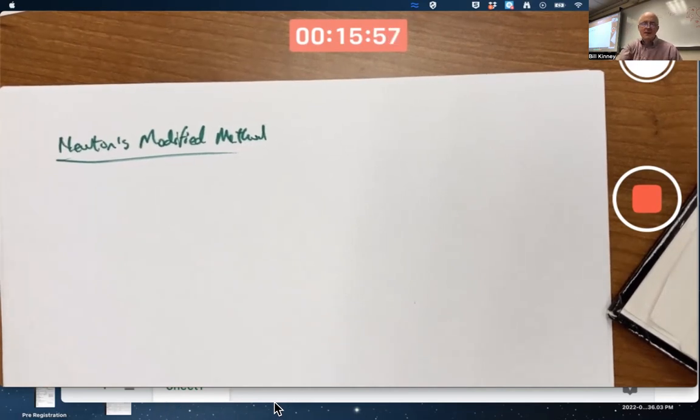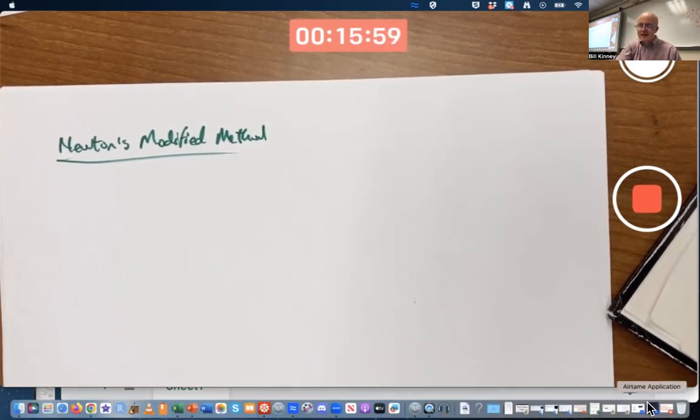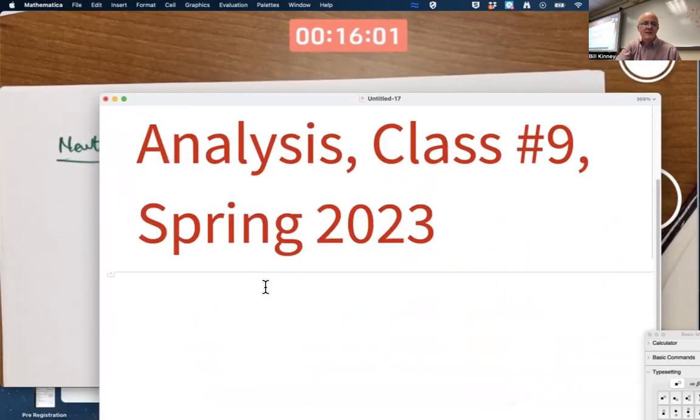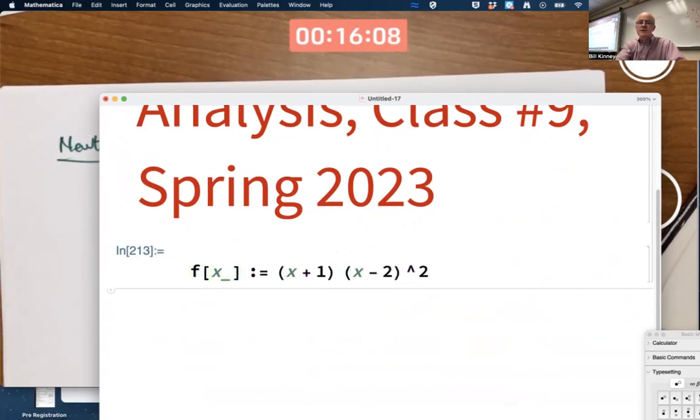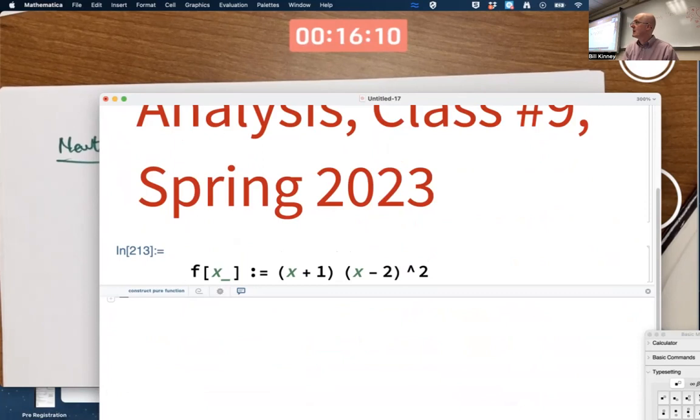For example, come up with an example here like a polynomial function. f(x) say is maybe x plus one times x minus two squared. The roots are very simple: negative one and two.